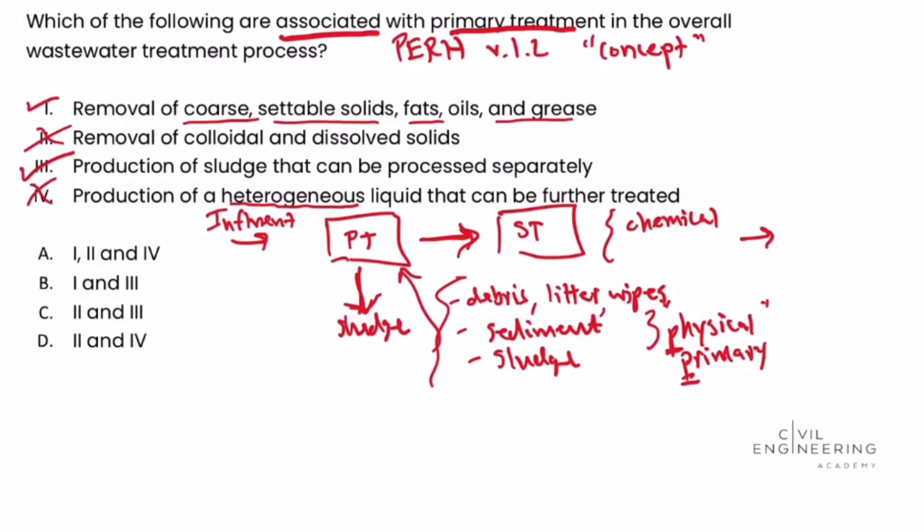We need to be careful and read it carefully, the heterogeneous versus homogenous. That could throw us off if we're not careful. So that leaves us with Roman numeral one and three. And looking at the answer choices, that is answer choice B. And we've successfully solved this problem.